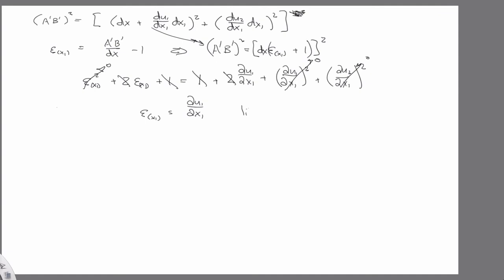And we could go on to, likewise for strain in the x2, partial u2 partial x2. And we could go on, and you can even make geometric arguments for the shear strains, where shear strains would be where you have i and j are not equal.